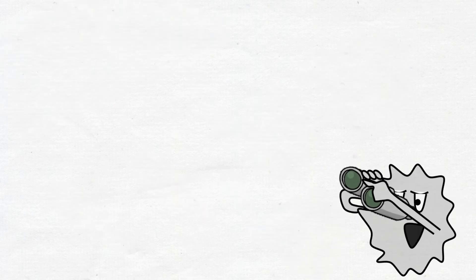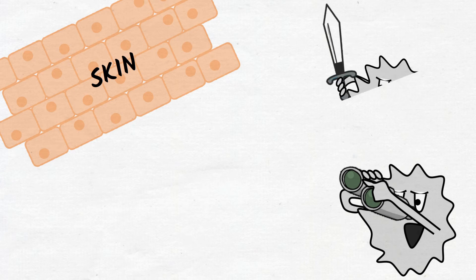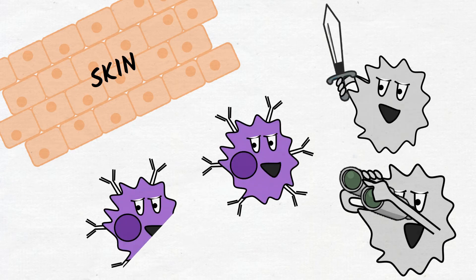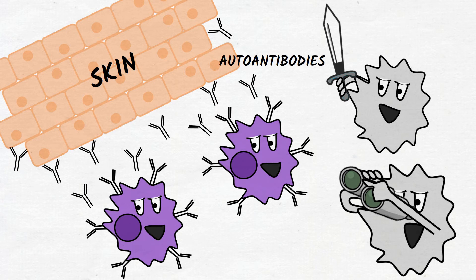In an autoimmune disease, the immune system mistakes part of the body as foreign, so it attacks and damages its own healthy cells of organs and tissues by releasing proteins called autoantibodies.